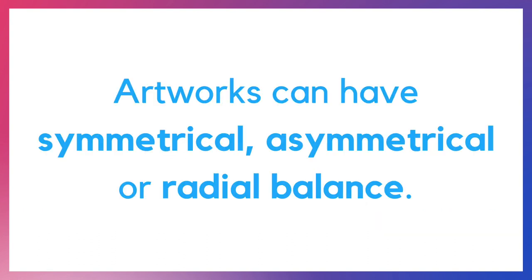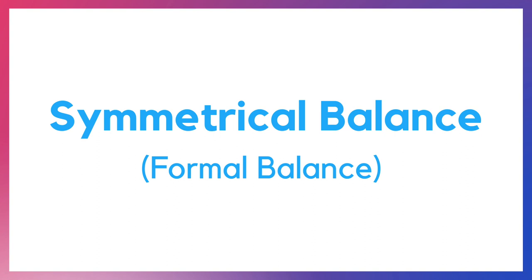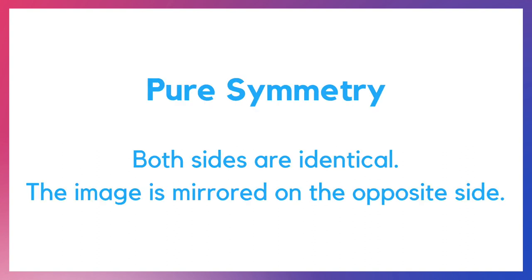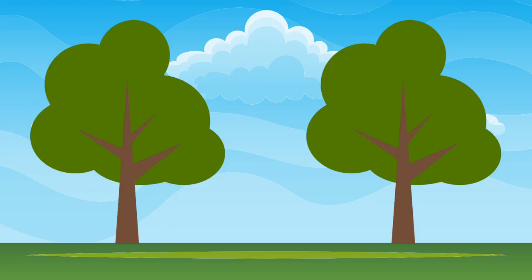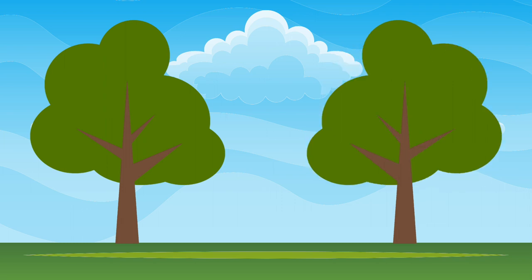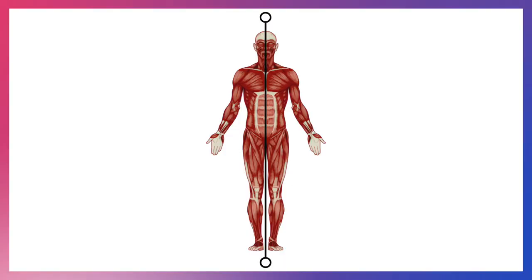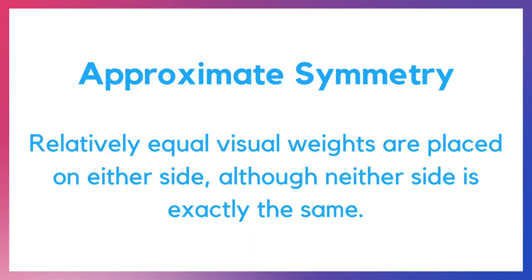Artworks can have symmetrical, asymmetrical, or radial balance. Symmetrical balance is also known as formal balance. The first example is called pure symmetry, where both sides are identical — the image is mirrored on the opposite side. The human body is an example of pure symmetry.